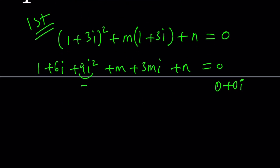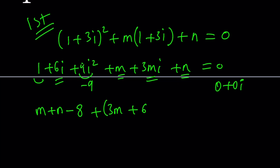9i² is negative 9. So collecting terms, the real part gives us m plus n minus 8, and the imaginary part gives us 3m plus 6, multiplied by i. That equals 0 plus 0i, meaning both the real part and the imaginary part must be zero.